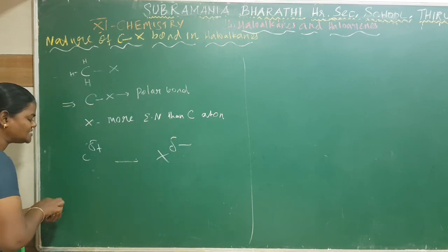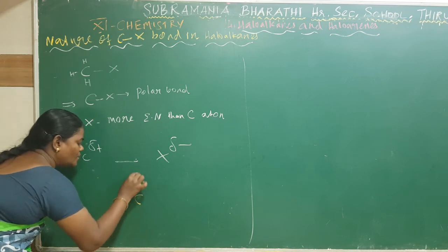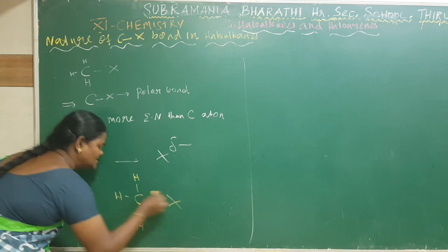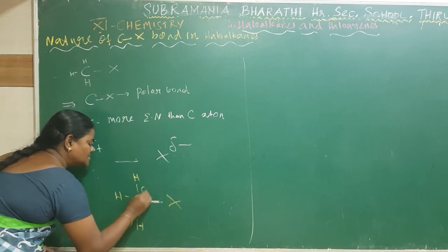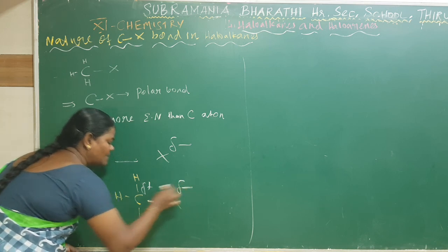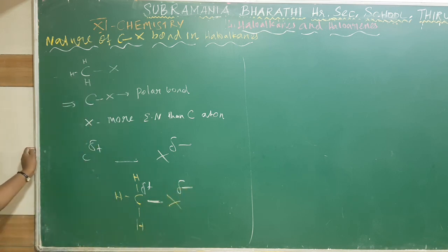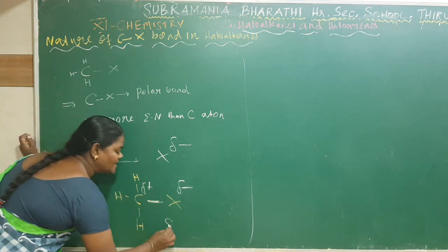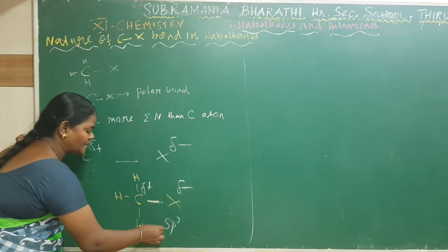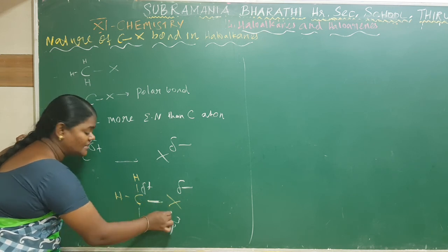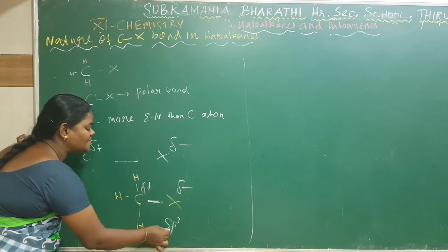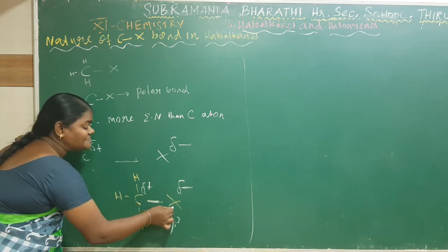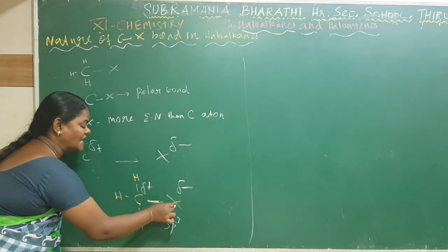You can write the representation of the carbon structure: carbon with 4 hydrogen atoms and here the halogen. This gives a partial delta-plus on carbon and partial delta-minus on halogen. This carbon is SP3 hybridized. The C-X bond is formed by the SP3 hybridized orbital of carbon overlapping with the partially filled P orbital of the halogen atom.